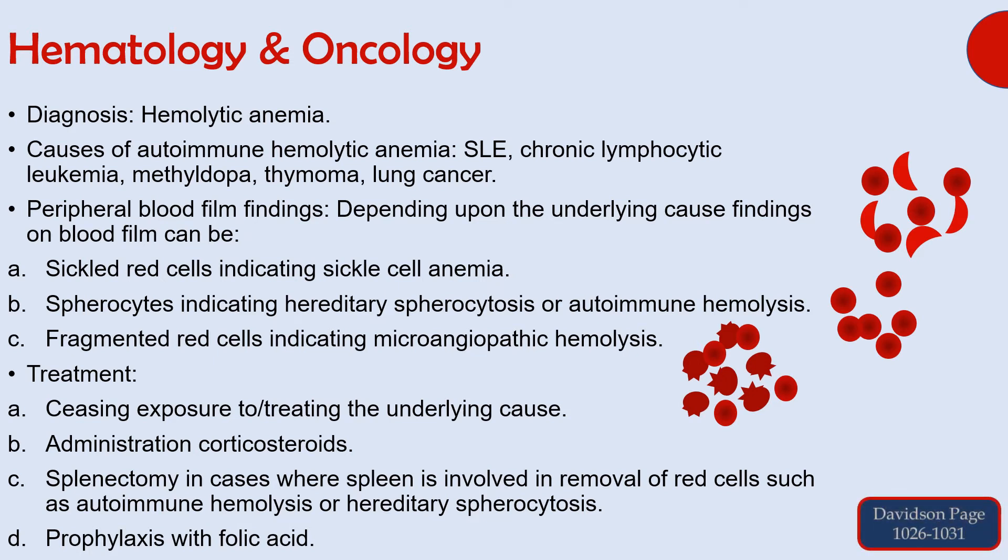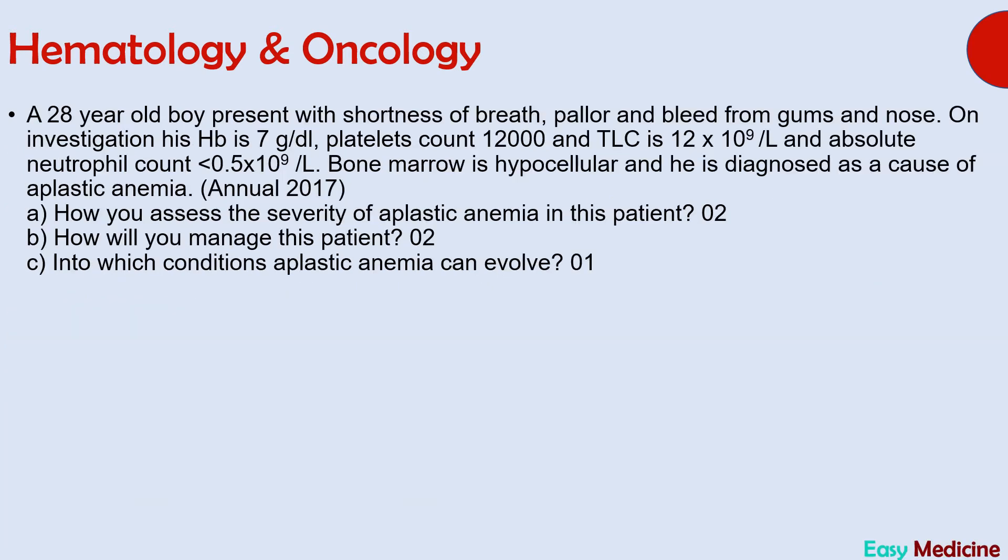Treatment of hemolytic anemia begins with ceasing exposure to or treating the underlying cause, followed by administration of corticosteroids and splenectomy in cases where the spleen is involved in removal of red cells — such as autoimmune hemolysis or hereditary spherocytosis — and prophylaxis with folic acid since patients of hemolytic anemia can develop folate deficiency.